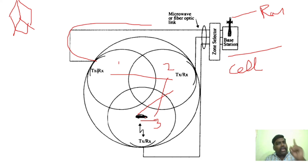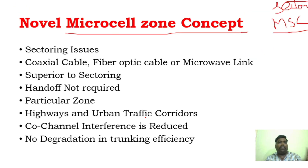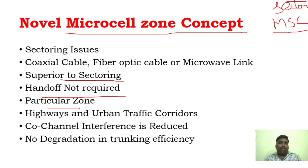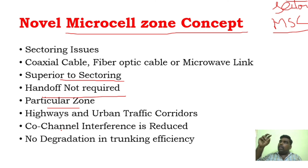The microcell zone concept keeps one active channel per cell, and that channel is relocated among zones by the single base station depending on where the user is. Only the active zone transmits, so interference from other zones is eliminated. This reduces channel interference and also avoids the trunking inefficiency seen in cell sectoring.